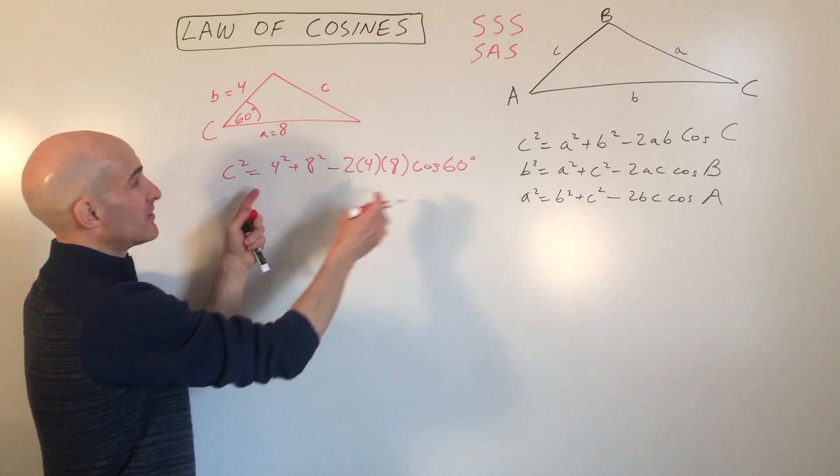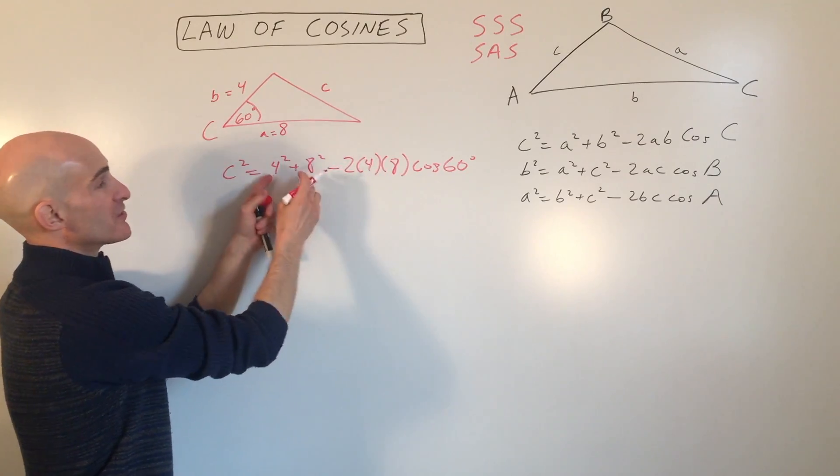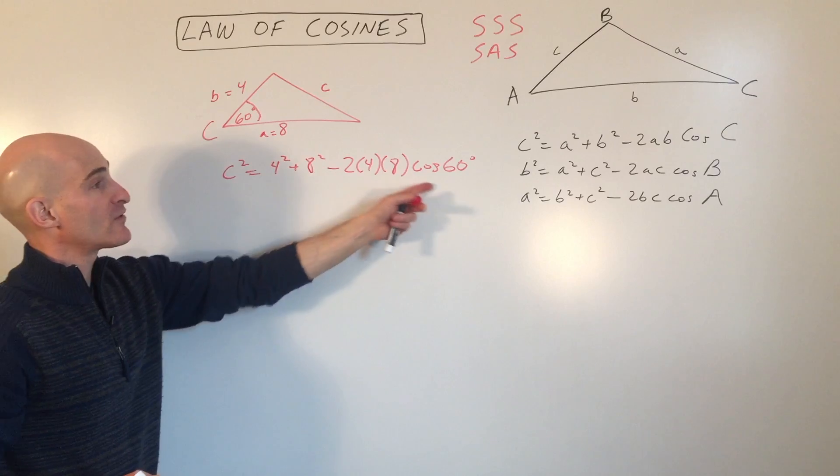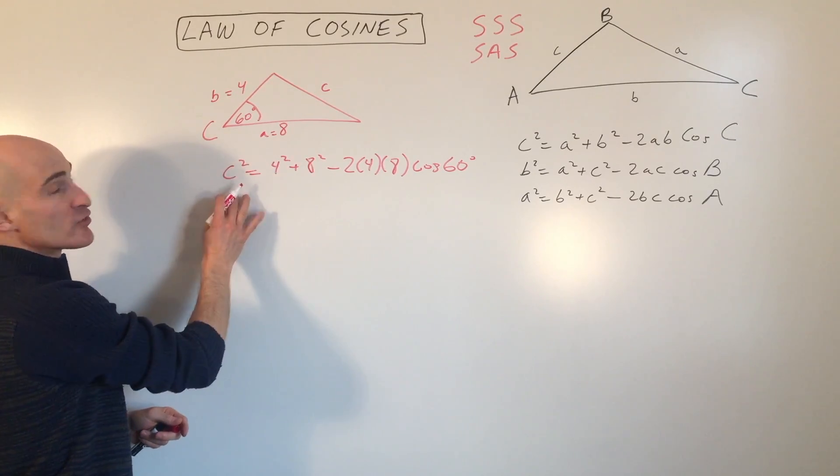So you can see there's your side angle side and we're solving for the side across from angle C here. Here's side C, here's angle C. A and B are the two other sides that make up that angle. So all we have to do is solve this and then take the square root to solve for C.